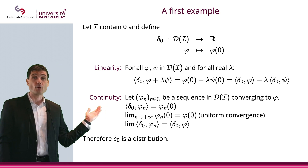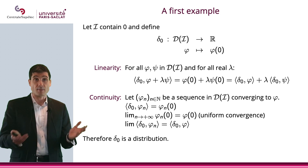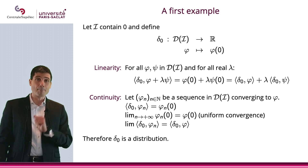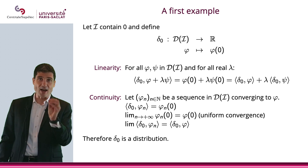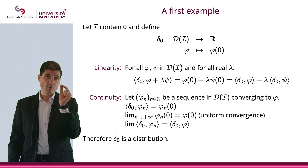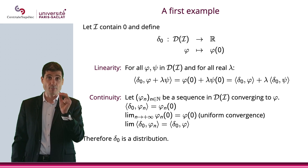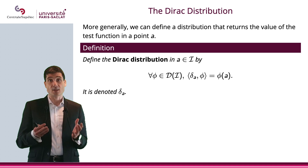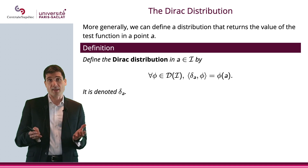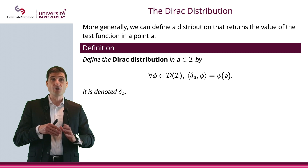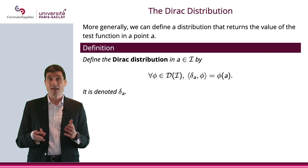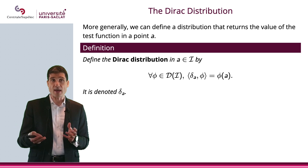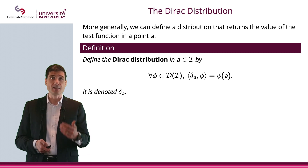Here is the very same thing using bracket notation. This distribution, where you evaluate the test function at one specific point, has a name: it's called the Dirac distribution. We can generalize this to the evaluation at any point a in the interval I. The Dirac distribution at a is defined as δₐ(φ) = φ(a).